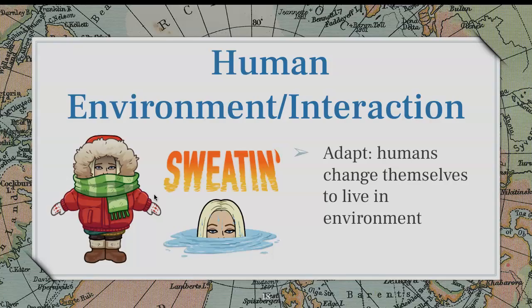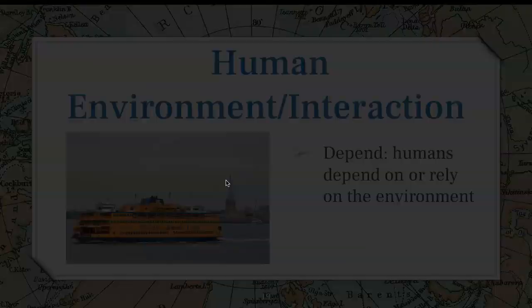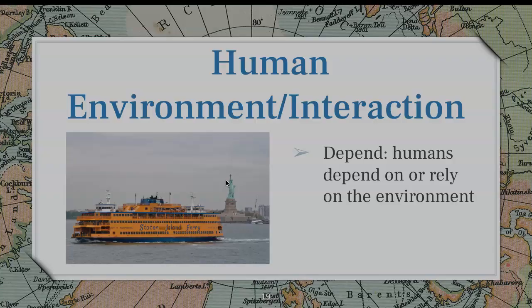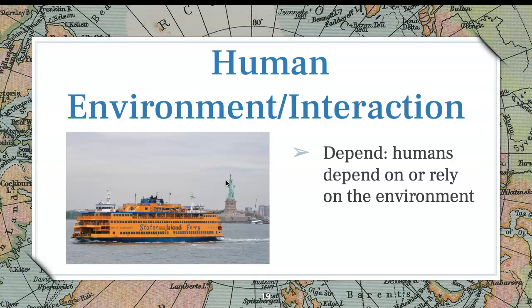Adapting is changing yourself — humans change themselves to live in an environment. When it's cold, we might put on winter clothes; when it's hot, we might wear shorts instead of a big parka jacket. Depending on the environment means some people depend on boats or ferries to get from the islands they live on to the mainland. Here's an example of a ferry in New York — from Staten Island, New Yorkers take this ferry to get into Manhattan to go to work. It takes cars and people.